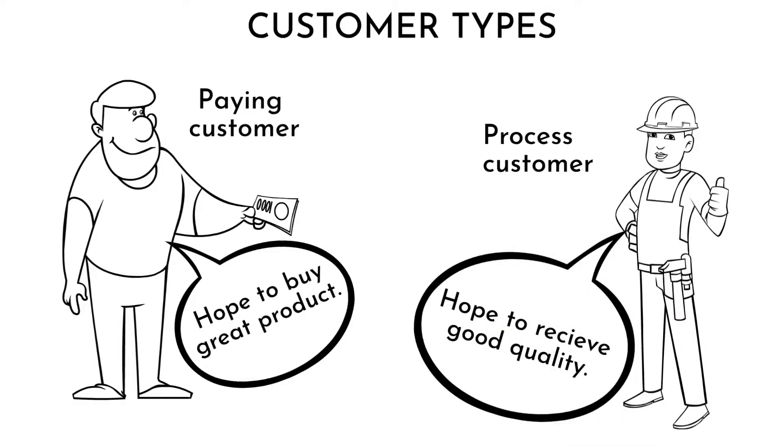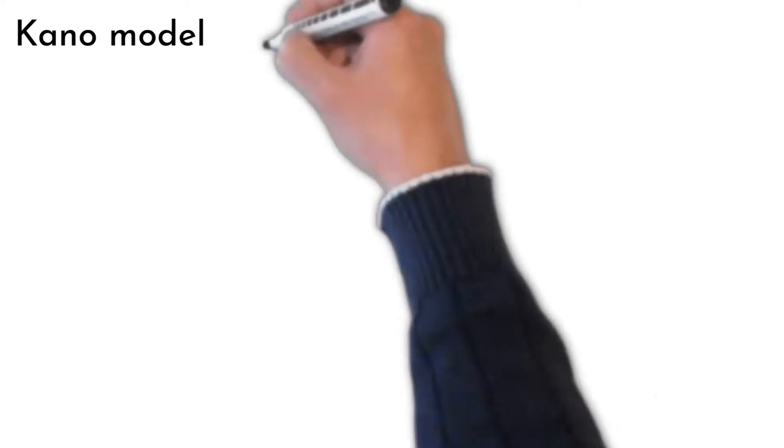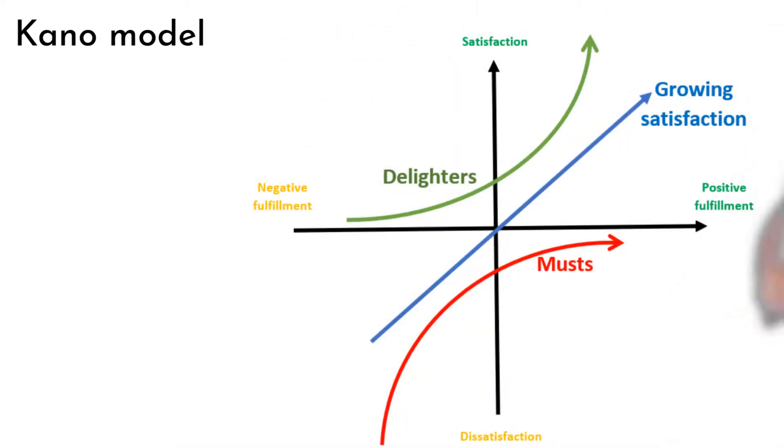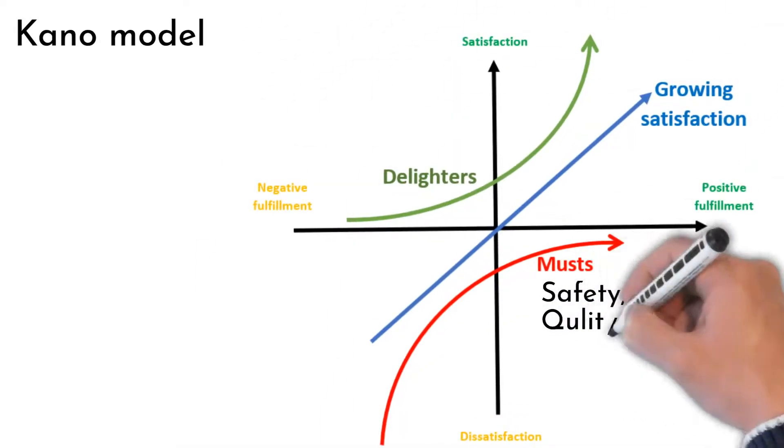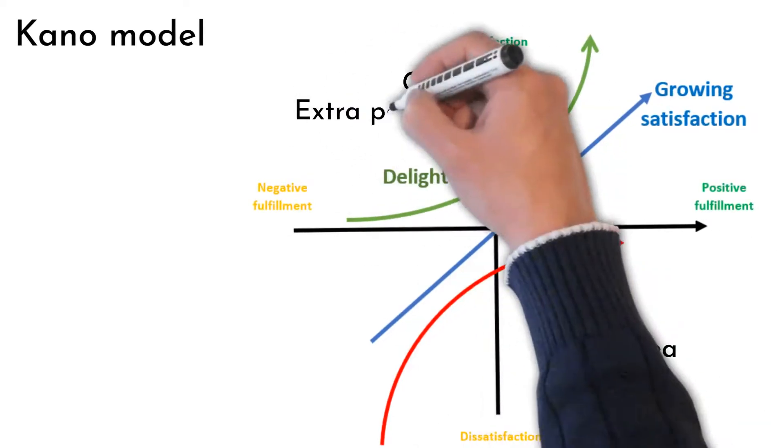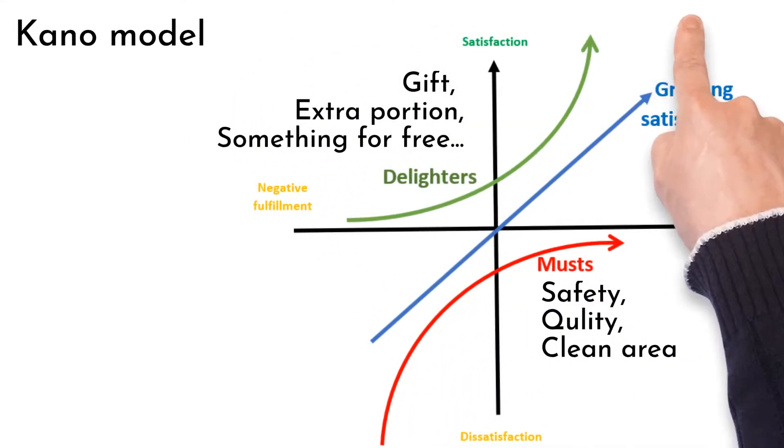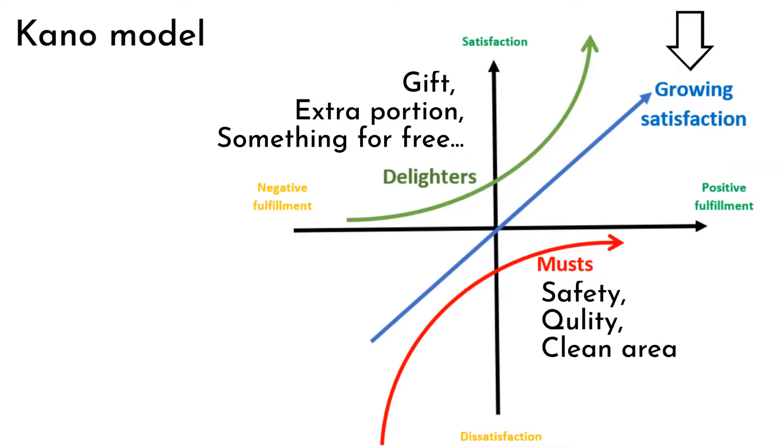There are two kinds of needs based on Kano model: must and delighters, with the direct relation between customer need and his satisfaction. So as much as we fulfill customer needs, his satisfaction is growing.